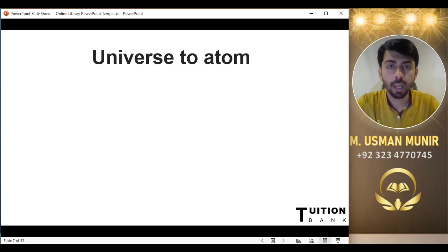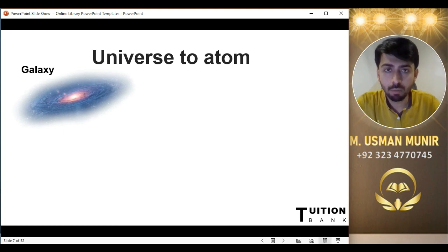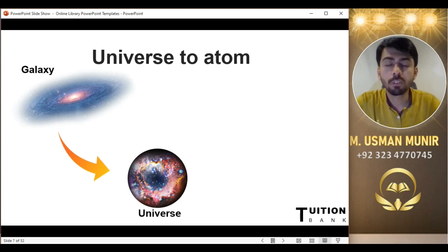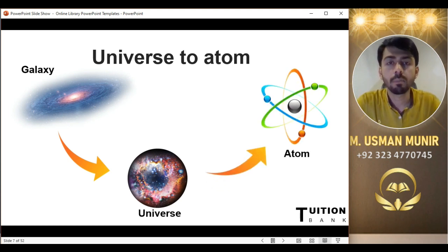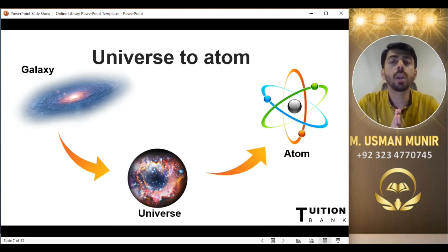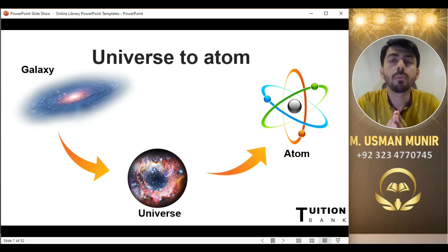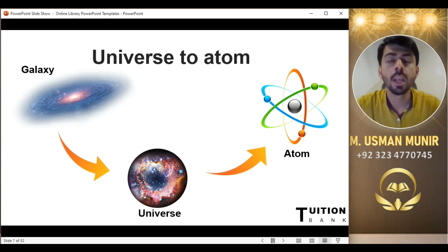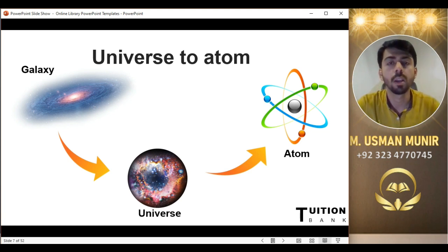ہماری universe matter ہے اور اس universe کا سب سے smallest unit بھی matter ہے۔ جس galaxy میں ہم رہتے ہیں، جس planet پر رہتے ہیں، یہ زمین — یہ سب matter ہے۔ اس کا smallest unit atom ہے۔ Atom مادے کا وہ چھوٹے سے چھوٹا ذرہ ہے جو مزید تقسیم نہ ہو سکے۔ The smallest particle of matter which cannot be divided further is known as atom. بعد میں اس کی definition کو expand کیا گیا — atoms کو further divide بھی کیا جا سکتا ہے کیونکہ اس میں electrons، protons اور neutrons ہیں — لیکن وہ chemistry میں پڑھیں گے۔